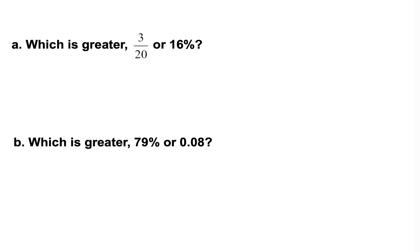In 6.1, we looked at how to write percents as both fractions and decimals, and today we're going to learn to compare their values. In order to compare values for fractions, decimals, and percents, we need to change them into the same form. Usually it's easier to either change them both into percents or change them both into decimals, because when we compare with fractions, we need a common denominator.